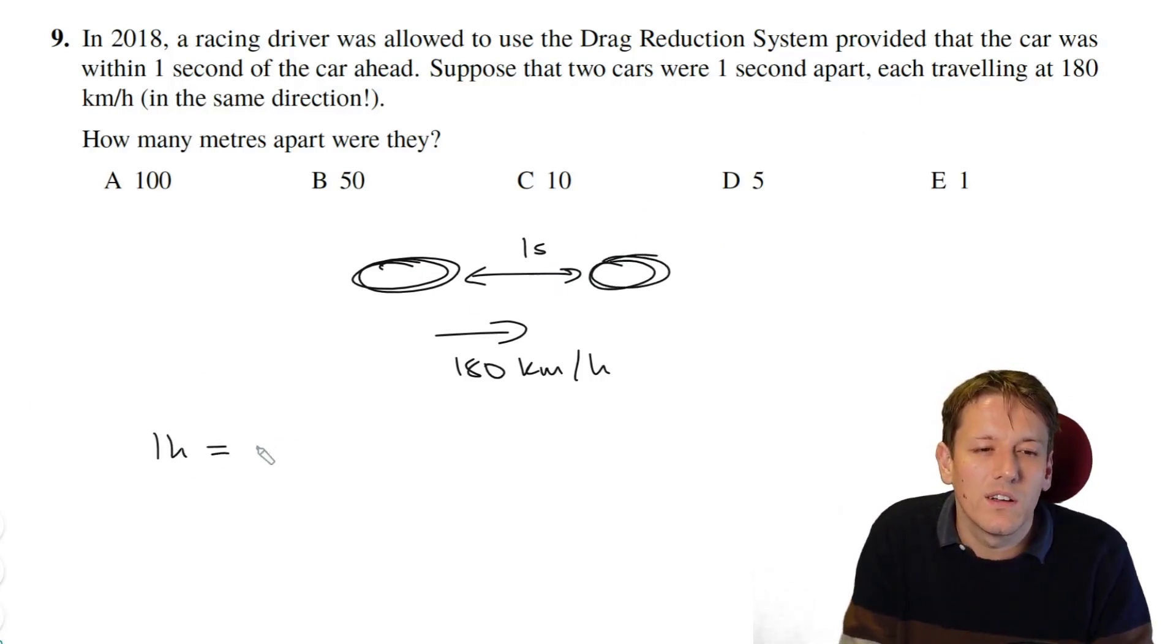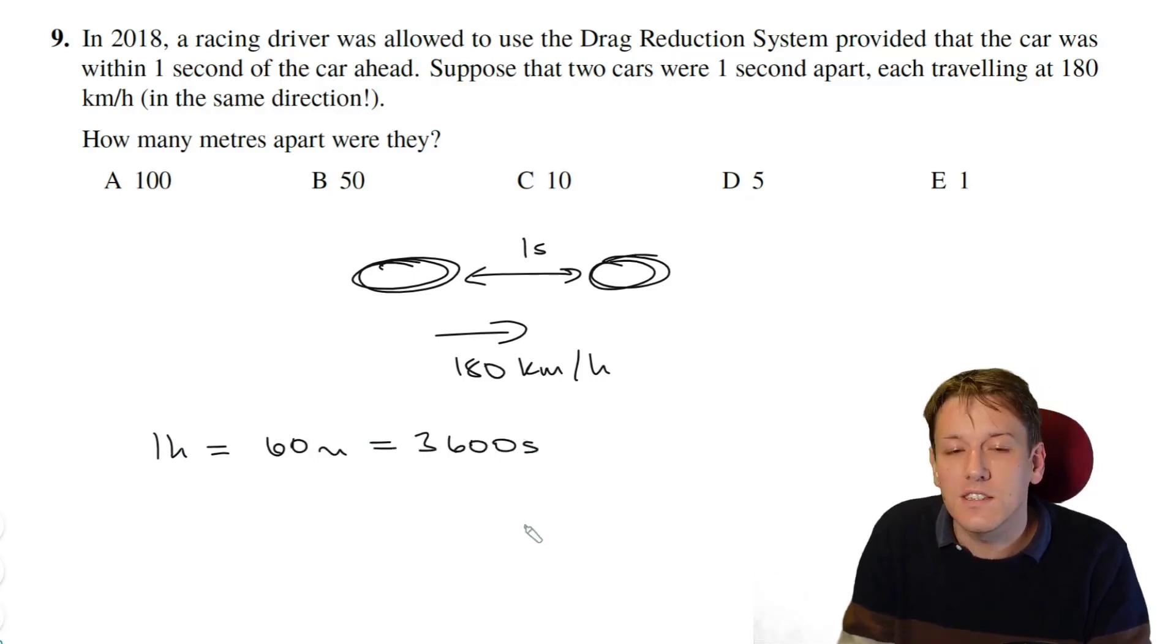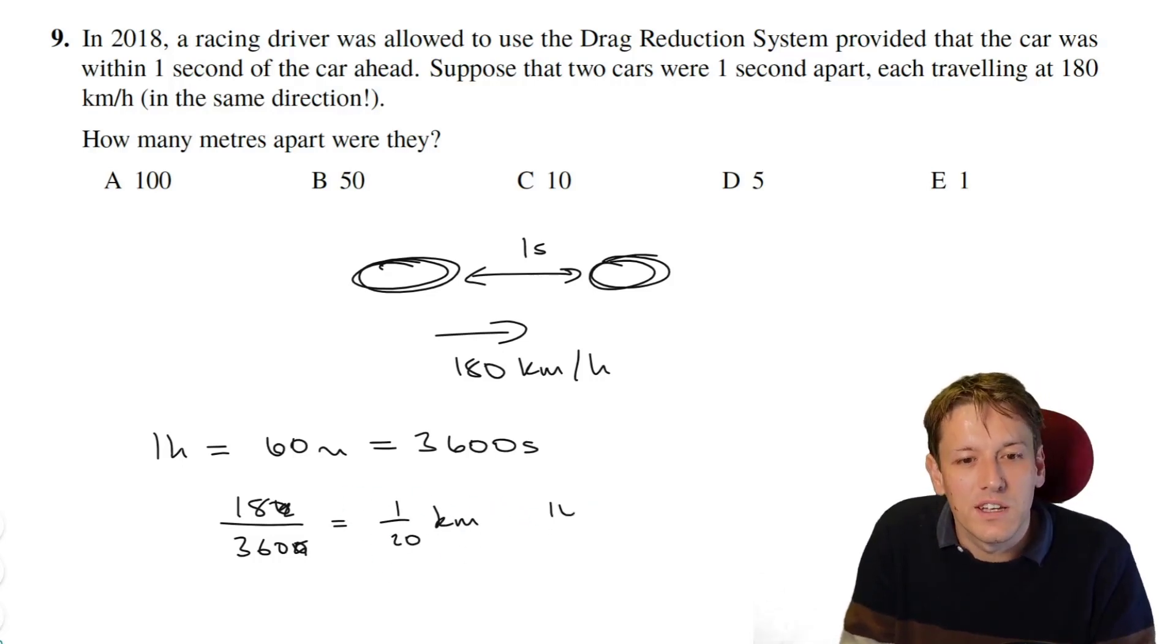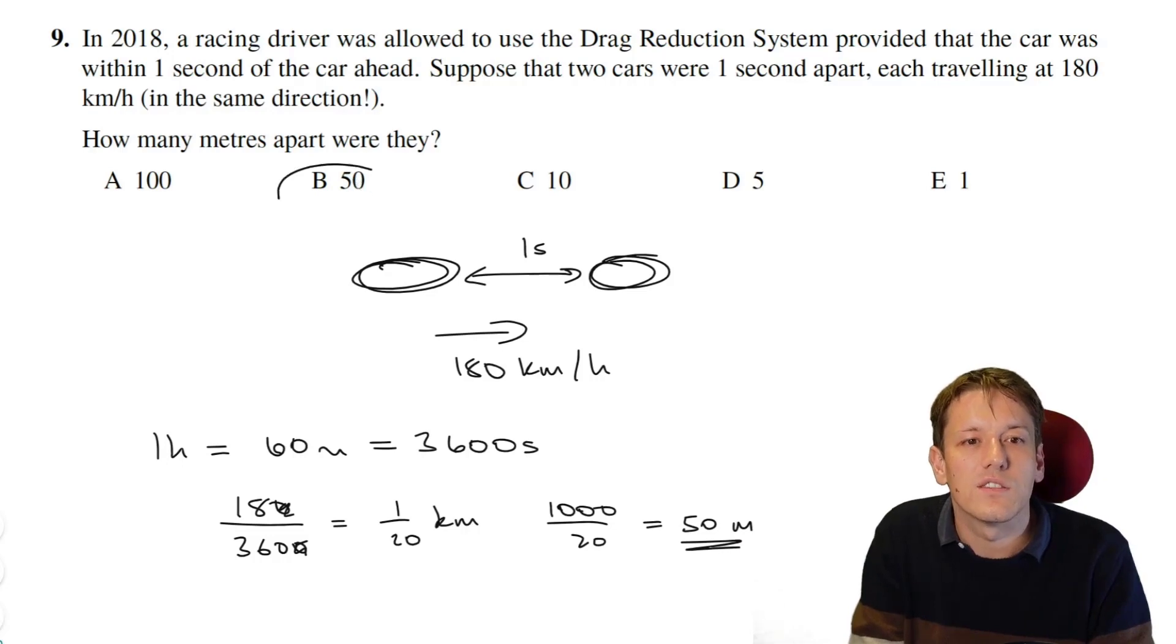So one hour, that's 60 minutes, or 60 times 60, which is 3,600 seconds. So if we're going 180 kilometres every hour, in each second, we'll go 180 divided by 3,600 kilometres, which is, we can divide top and bottom by 10 here, we're 18 over 360, which is 1 20th, so it's 1 20th of a kilometre, and you can times that by 1000 to make that into metres, and that gives us 50 metres, which is 1 20th of a kilometre, and so the answer here is B.